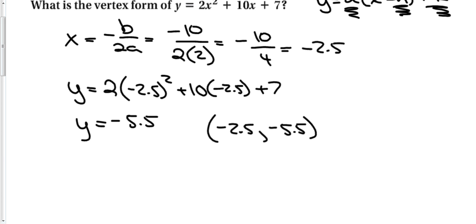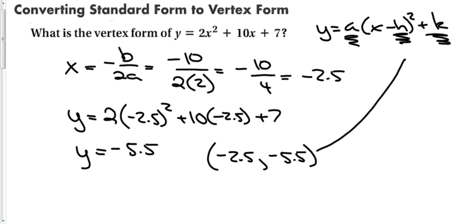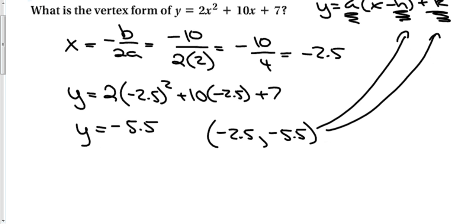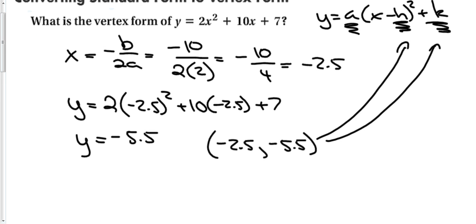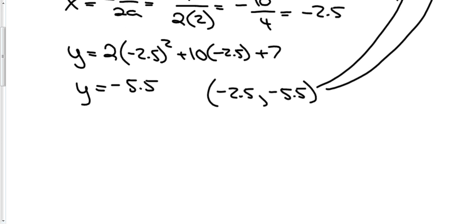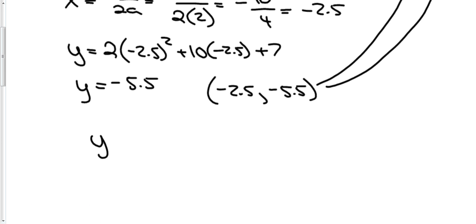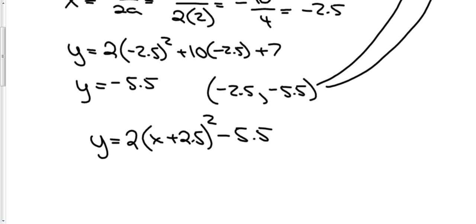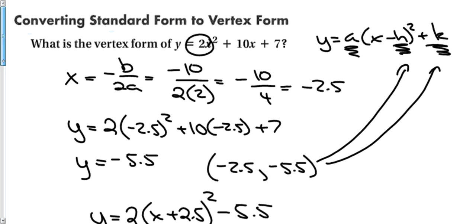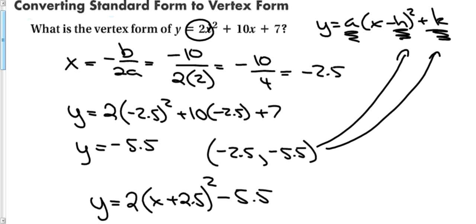Now that I know the vertex, I plug h and k back in to write vertex form. Since a doesn't change (a = 2), the vertex form is y = 2(x - (-2.5))² + (-5.5), which simplifies to y = 2(x + 2.5)² - 5.5. And that is how we change something from standard form to vertex form.